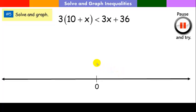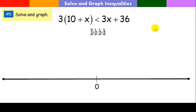Okay. Go ahead and solve and graph this. Okay. Fairly simple. I'm going to distribute. I'm going to subtract 3x from both sides. And now I'm going to what? Well, 36 is greater than 30. Well, of course it is.